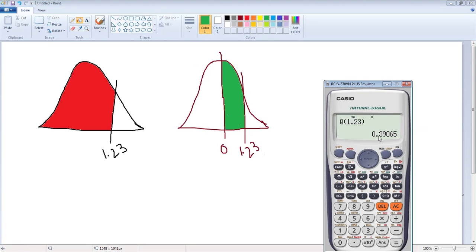You will get the value which is 0.3907. Obviously, that entire value minus 0.5, which is half the probability, and you get the probability between your particular z-value and your mean.